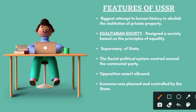This was the first attempt in which private property was completely abolished, and a society with equality was established. It had supremacy of the state — all 15 countries were ruled by one party, the Communist Party. Opposition parties were not allowed. Besides the economy, the state planned and controlled everything. These were the basic features followed by all 15 countries included in the USSR.